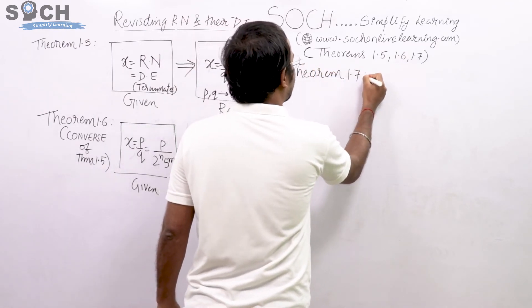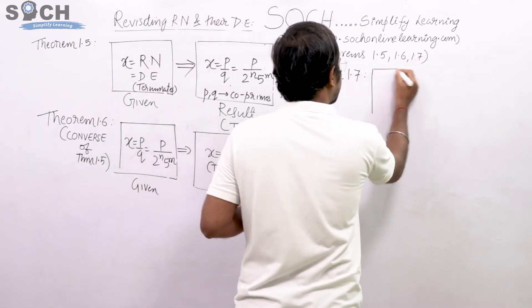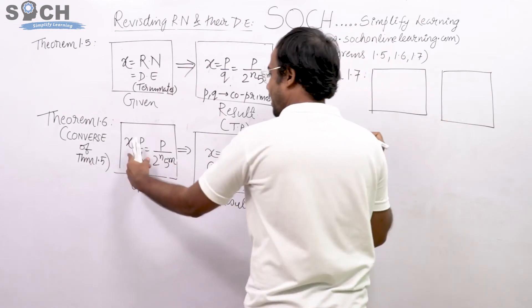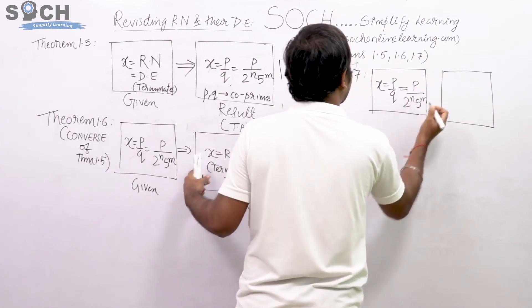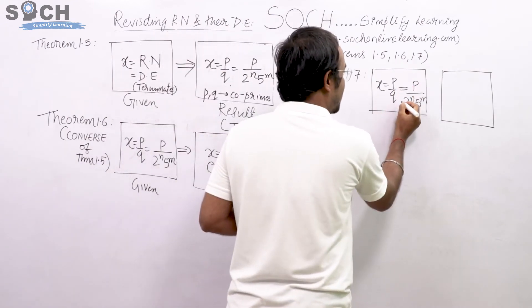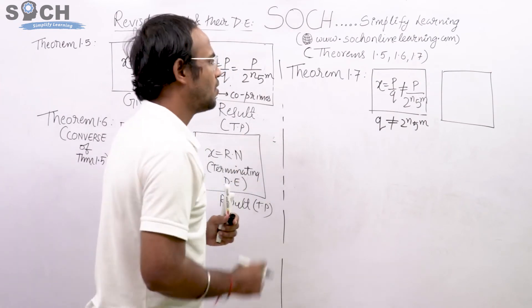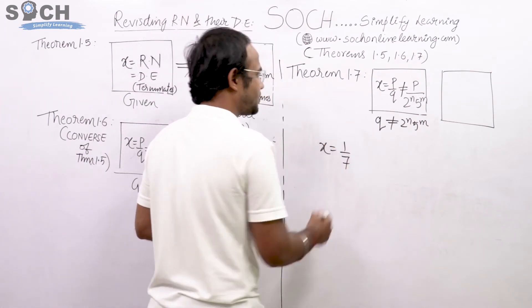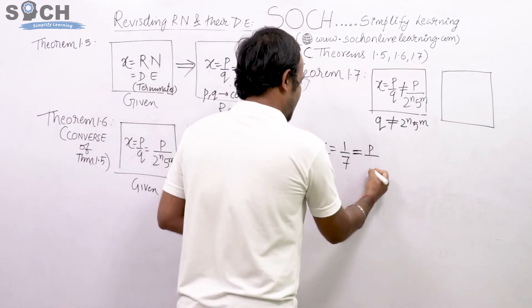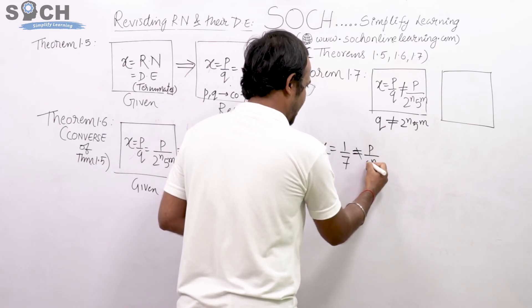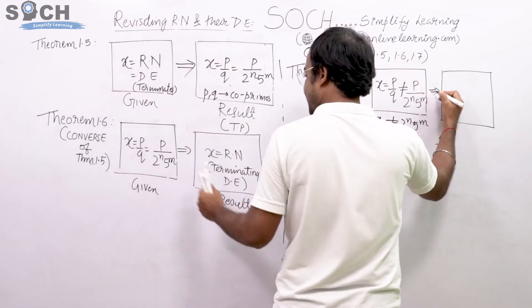Theorem 1.7, without going into the statement, you can always convert this symbolic form into statement. We will take 1.6 like 1 box and 2 box. In one box I write the same thing: X equal to P by Q which is P by 2 raised to N, 5 raised to M. But this time we are putting that it is not equal to like this, because here the Q is not of the form 2 raised to N, 5 raised to M. For example, if I take X equal to 1 by 7.